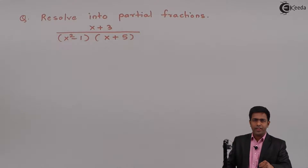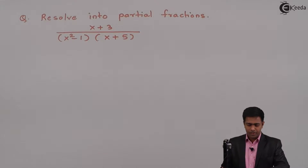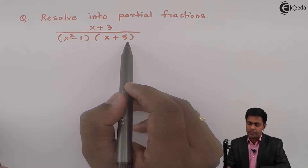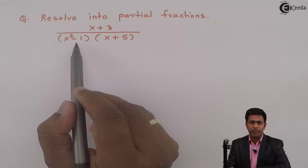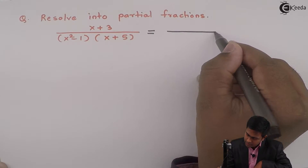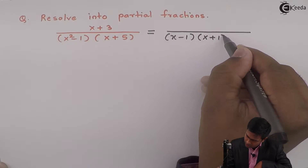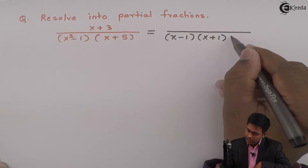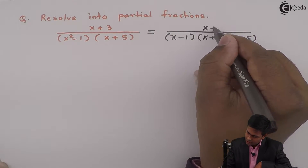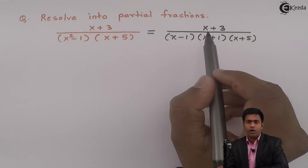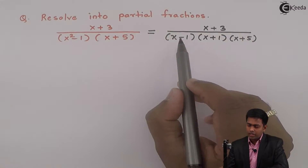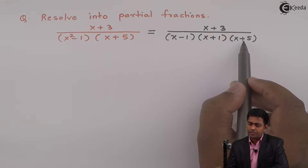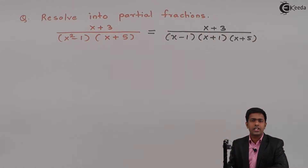Hello everyone. In this problem we have to find the partial fractions for the given fraction. If we observe the denominator, we have x plus 5, which is a linear factor, and x squared minus 1, which we can factor as x minus 1 and x plus 1. So in the denominator we have 3 factors, and all 3 are distinct linear factors. We will solve this by the method of distinct linear factors.